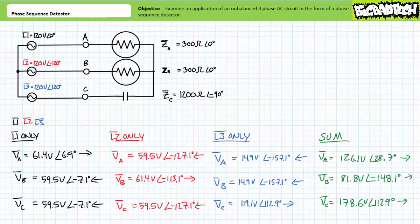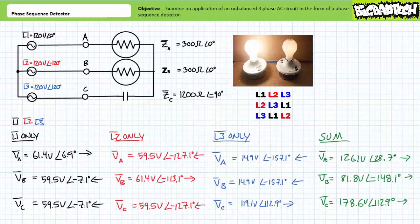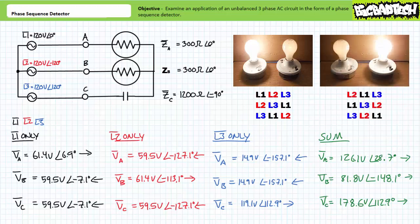Ultimately, you should observe light A to be brighter for the following configurations: L2 to A, L3 to B, and L1 to C; and L3 to A, L1 to B, and L2 to C. You should observe light B to be brighter for the following configurations: L2 to A, L1 to B, L3 to C; L1 to A, L3 to B, L2 to C; and L3 to A, L2 to B, and L1 to C.